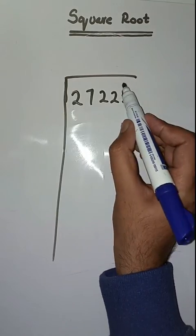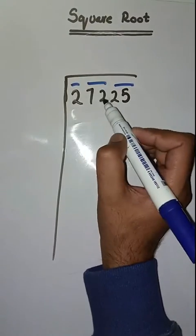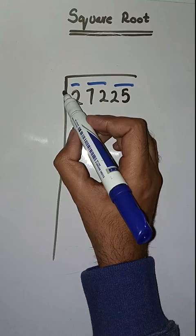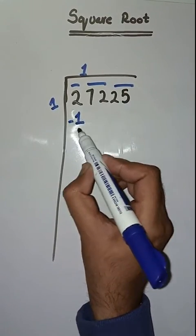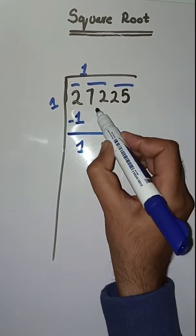First we have to solve 2. So we take a number 1. One times one is one. Minus, we get one. Next pair we have 72. Bring it down.